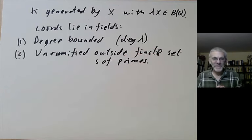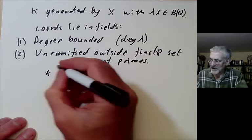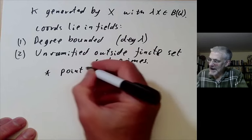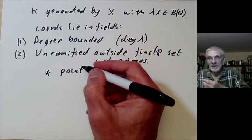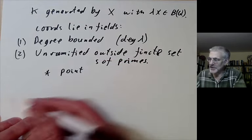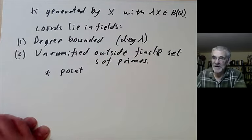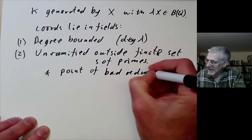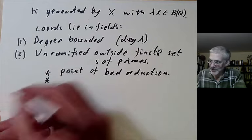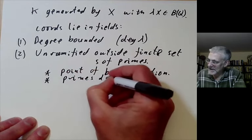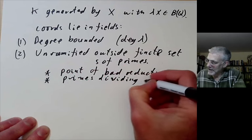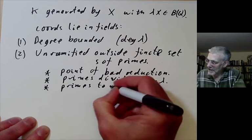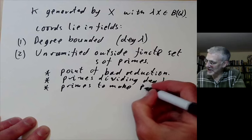What you do is you've got a few bad primes and the bad primes come from the following. First, we take a model for A and B over the ring of integers of some number fields and ask for which primes do they not reduce? Do they become singular curves when you reduce modulo that prime? So these would be points of bad reduction. There are a finite number of those. Then we can have primes dividing the degree of lambda.